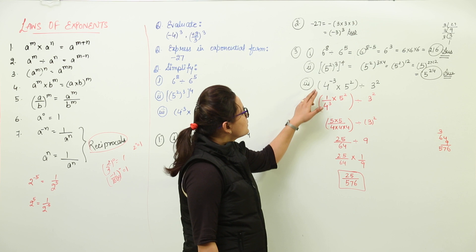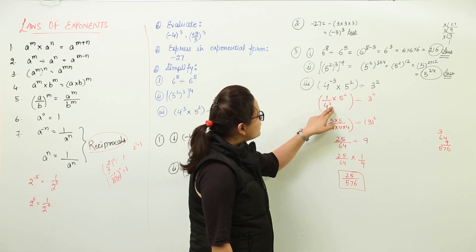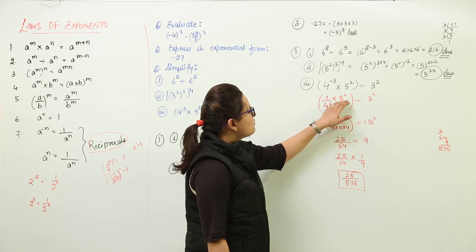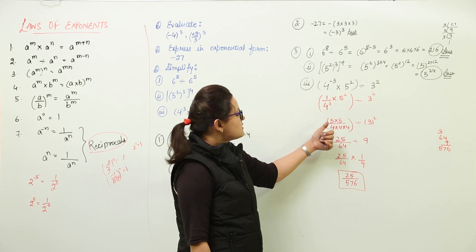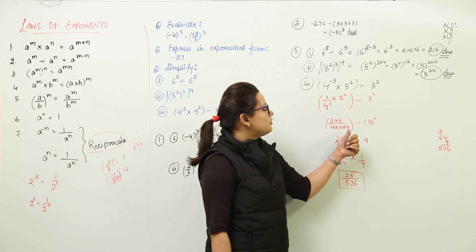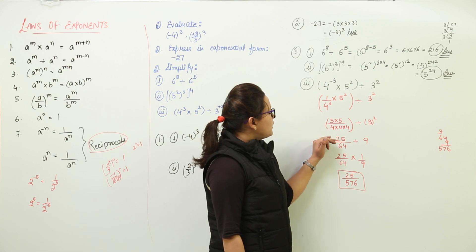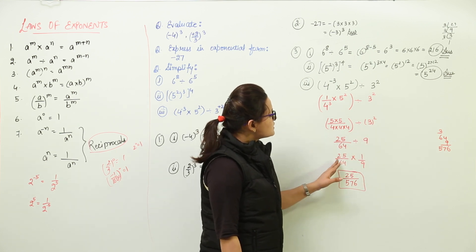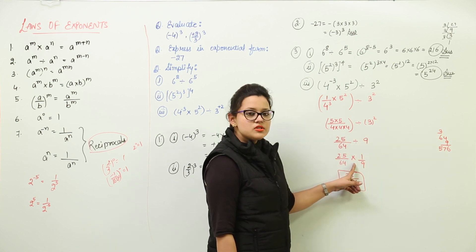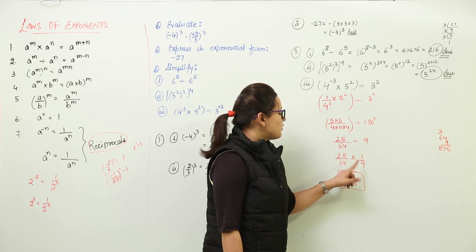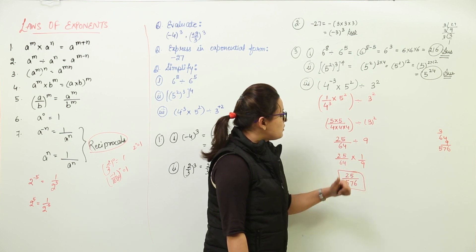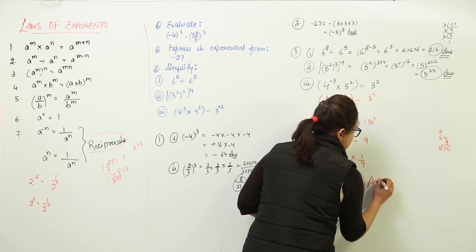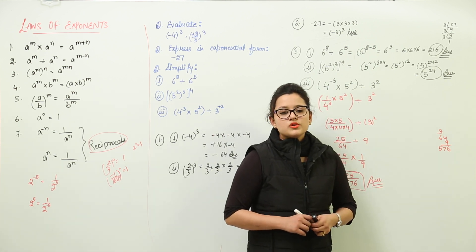Revising the steps: we converted 4 raised to power minus 3 into its reciprocal, that is 1 by 4 raised to power 3. Then 5 raised to power 2 remains the same in the brackets, divided by 3 raised to power 2. We wrote 5 into 5 and 4 into 4 into 4, getting the fraction 25 over 64, divided by 9. Then 25 upon 64 multiplied with the reciprocal 1 by 9 gives 25 upon 576. This is how you apply the laws of exponents to solve questions.